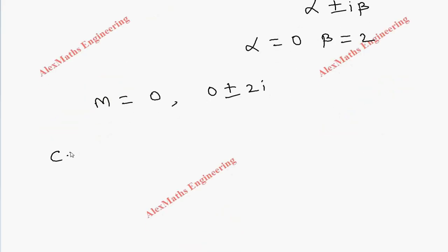As per the procedure, the complementary function is, for the single real value, c₁e^(m₁x), so e^(0x). Then for the imaginary values, e^(αx), where α is 0, make it open: constant into cos(βx), β is 2, then another constant into sin(βx), β is 2.